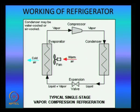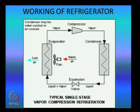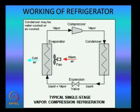Regarding the working of the refrigerator: in the compressor, the temperature and pressure increase. The fluid then goes to the condenser, where the temperature decreases and pressure is kept constant. Then in the expansion valve, the temperature remains constant and pressure increases. Finally, the fluid goes to the evaporator, where the warm air is converted to cold air.